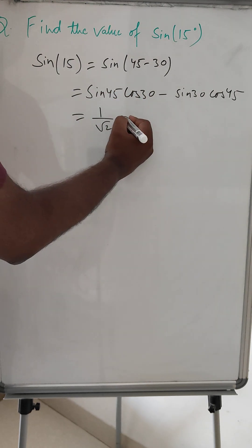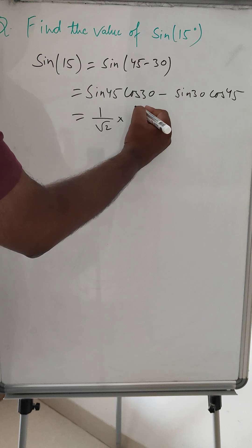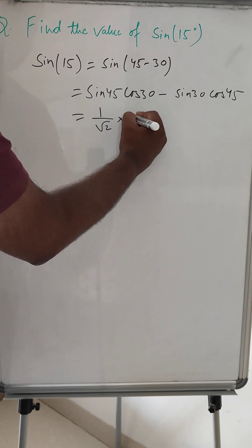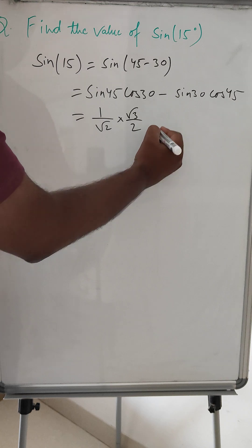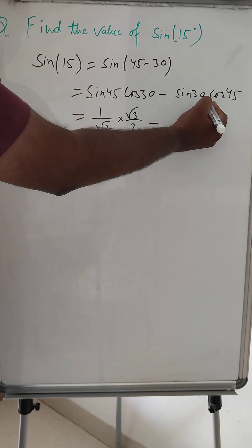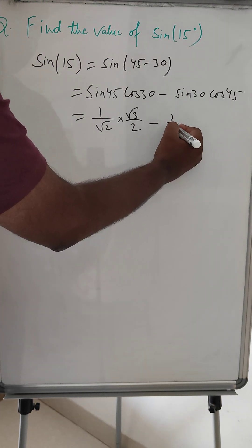And cos 30 is how much? Root 3 over 2. And sin 30 is 1 over 2.